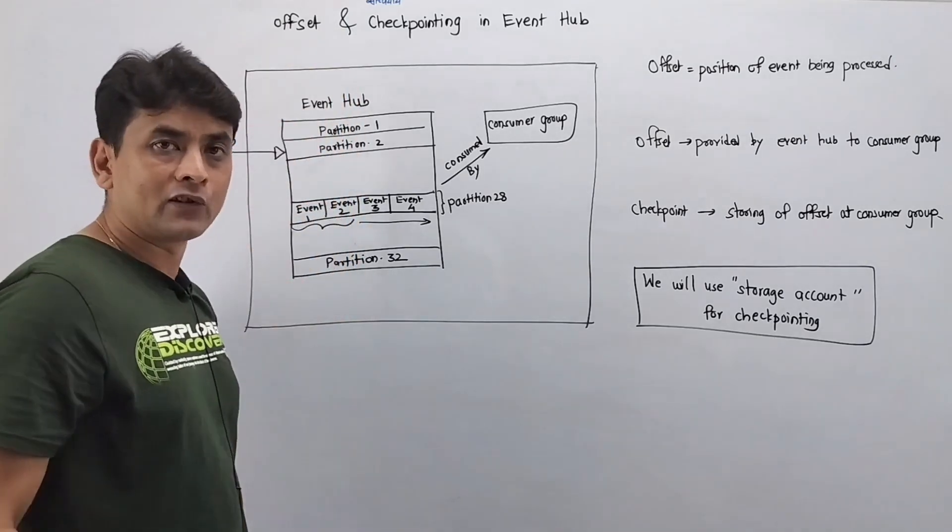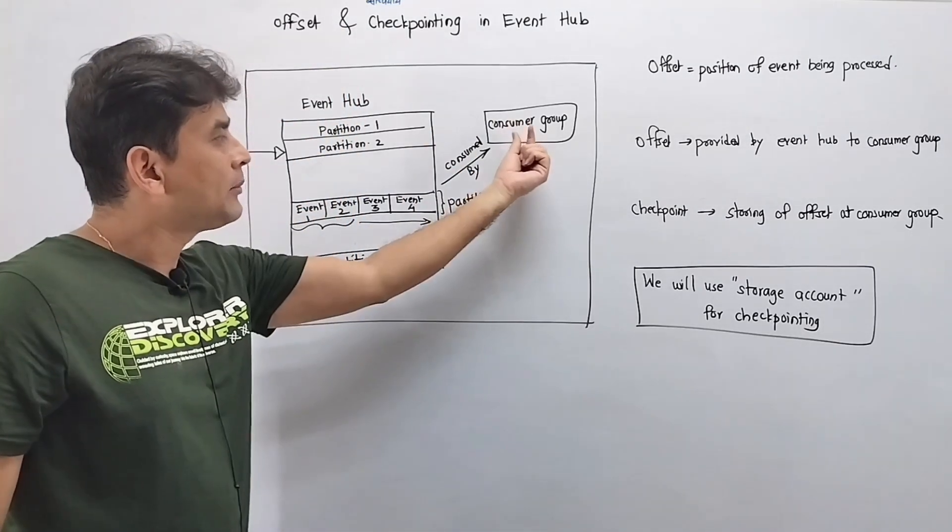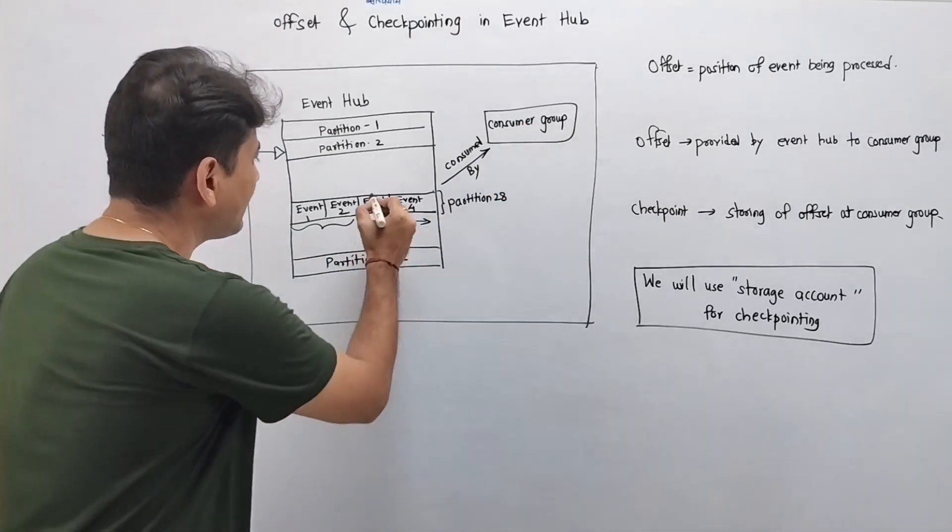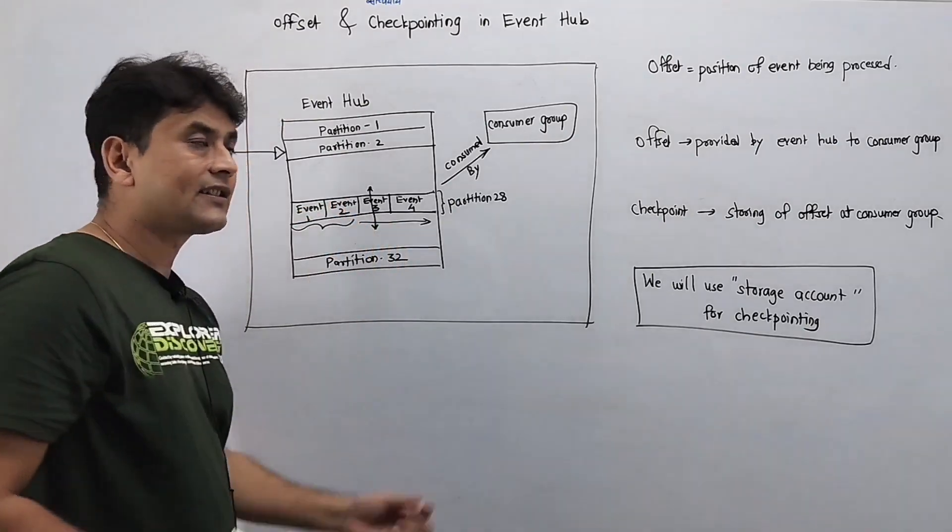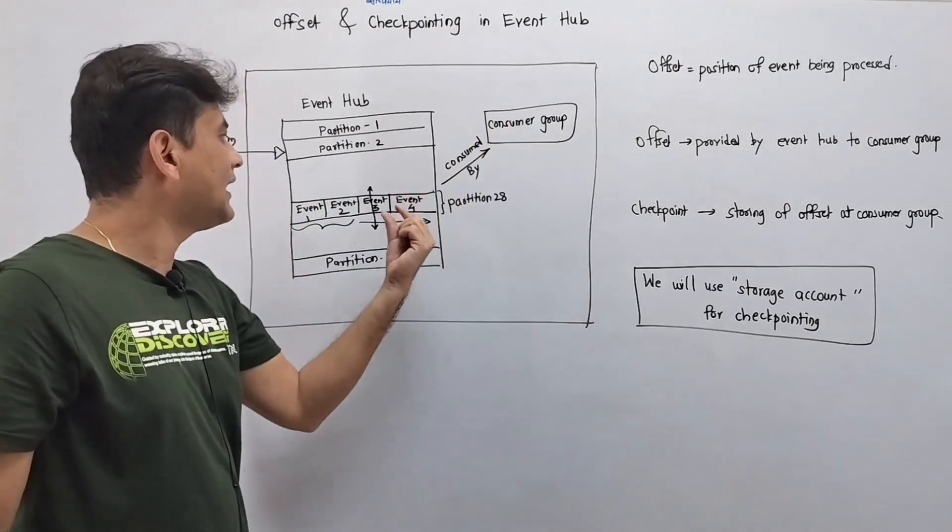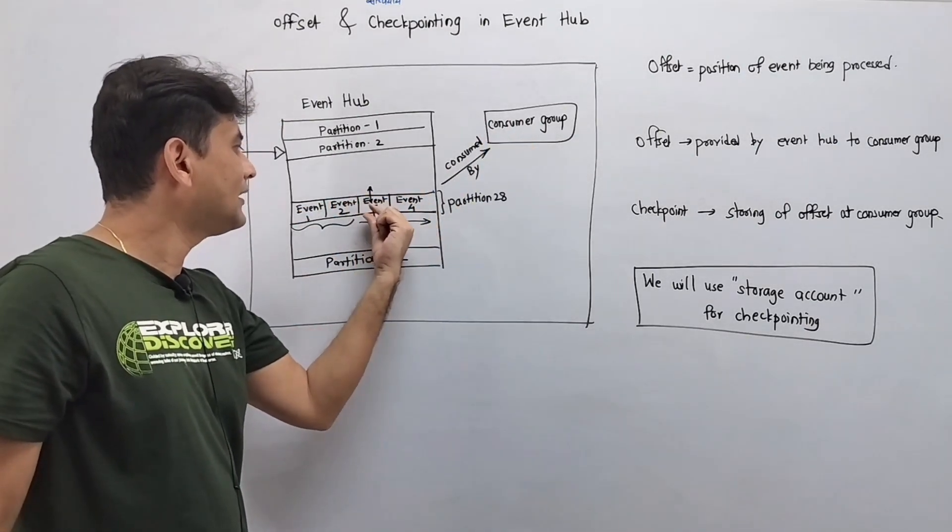When this consumer group failed or when it got disconnected, at that time event three was the offset. Hence, when it came back to life again, it started reading from event three onwards.